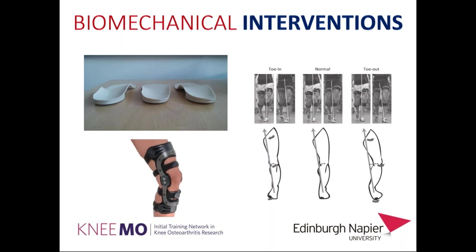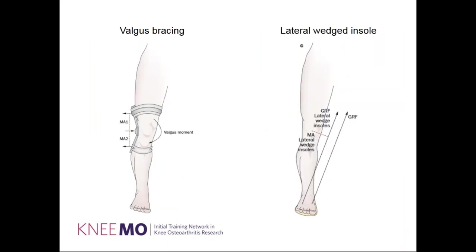Here are two examples of how these interventions work. Valgus bracing aims to produce a valgus moment on the knee that contrasts the normal adduction moment, reducing load on the medial compartment. Lateral wedged insoles have the same objective of reducing load on the medial compartment, but do so by shifting the ground reaction force laterally and therefore reducing the lever arm of this force.